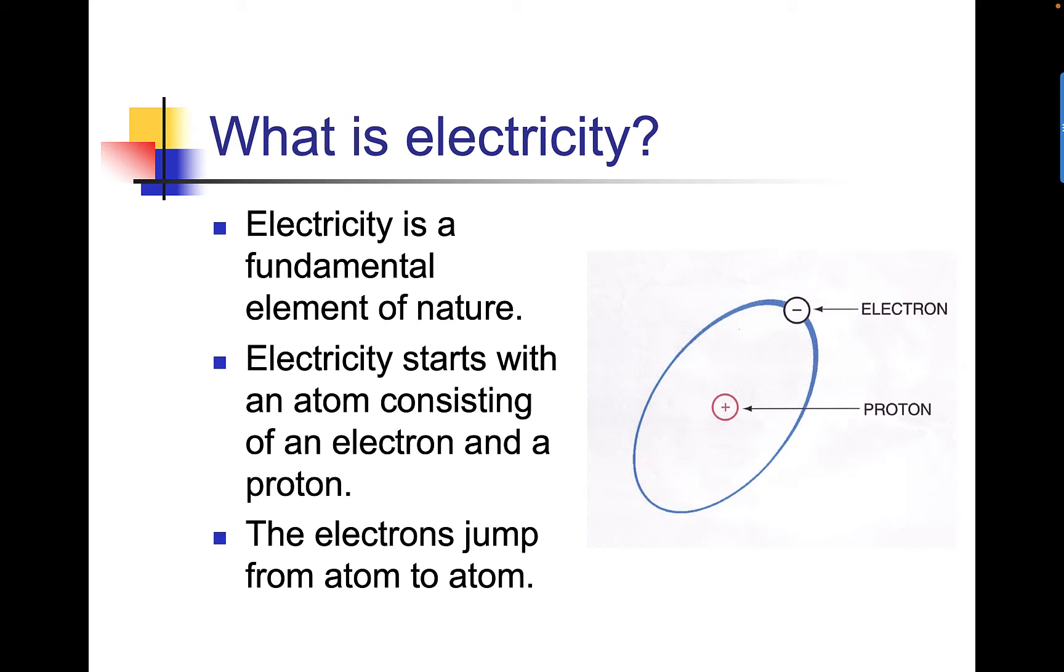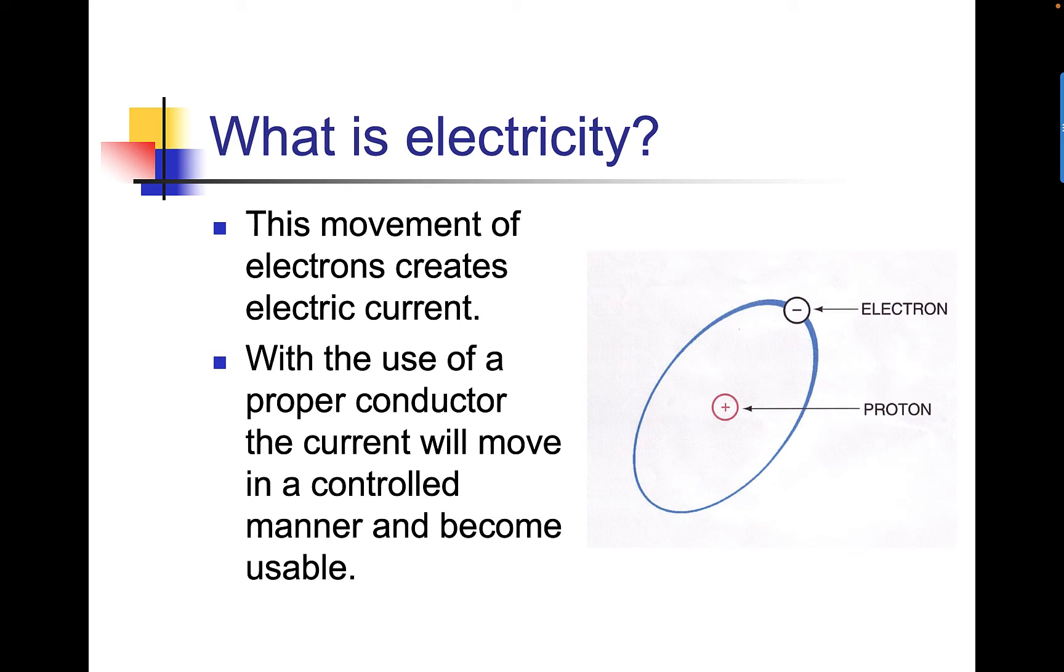So what is electricity? Electricity is a fundamental element of nature. Electricity starts with an atom consisting of an electron and a proton. The electrons jump from atom to atom. This movement of electrons creates electrical current.